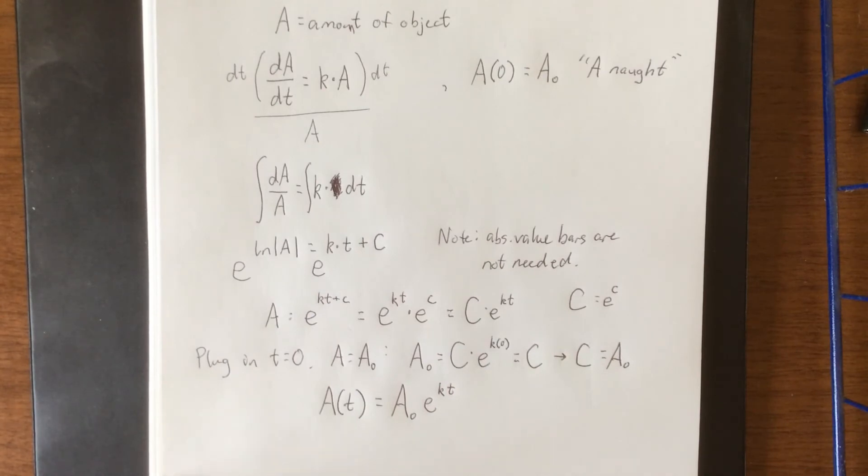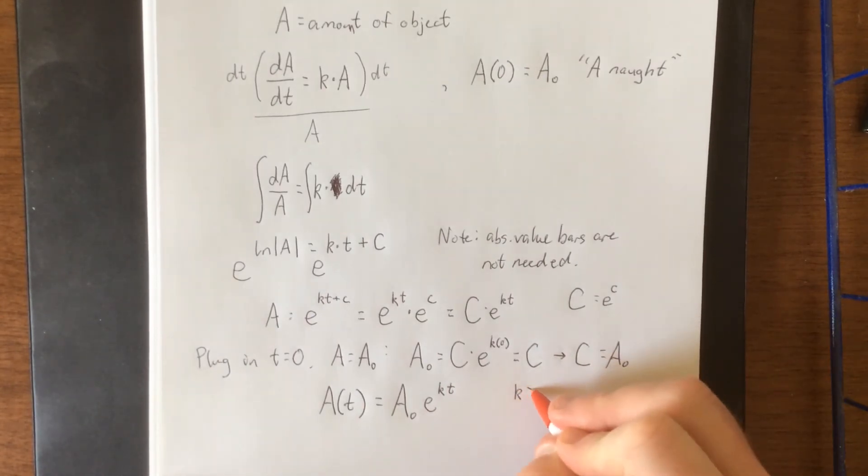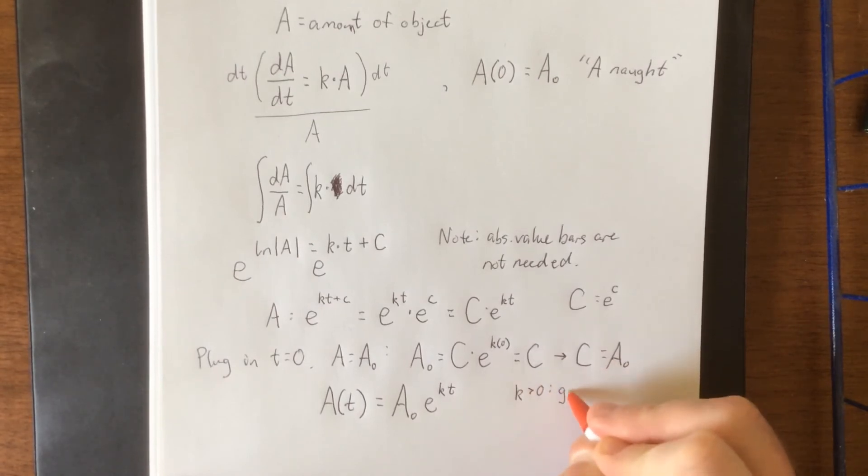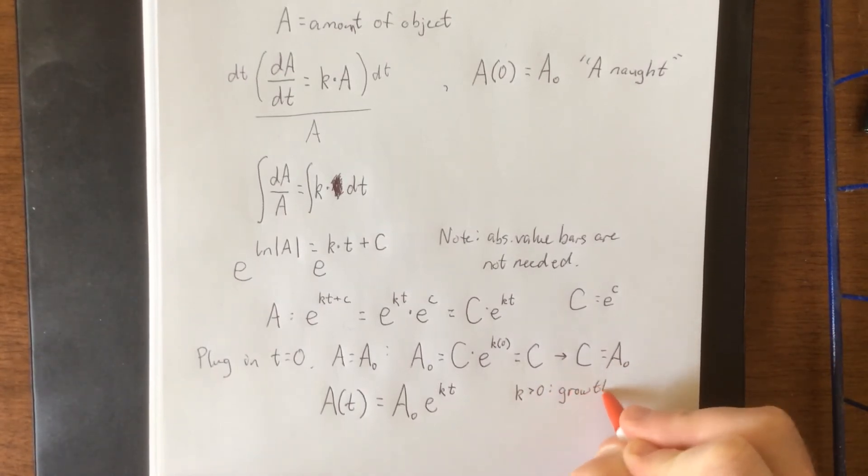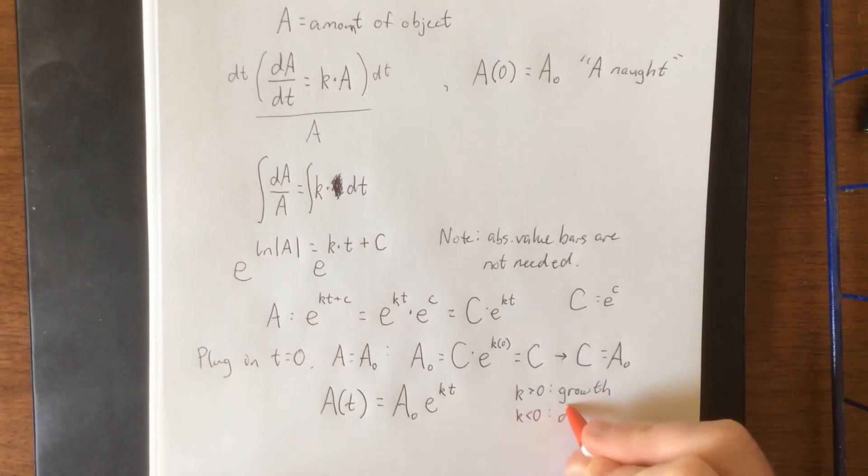Now to distinguish between the growth model and the decay model, if k is greater than zero, then we have a growth model. And if k is less than zero, we have a decay model.